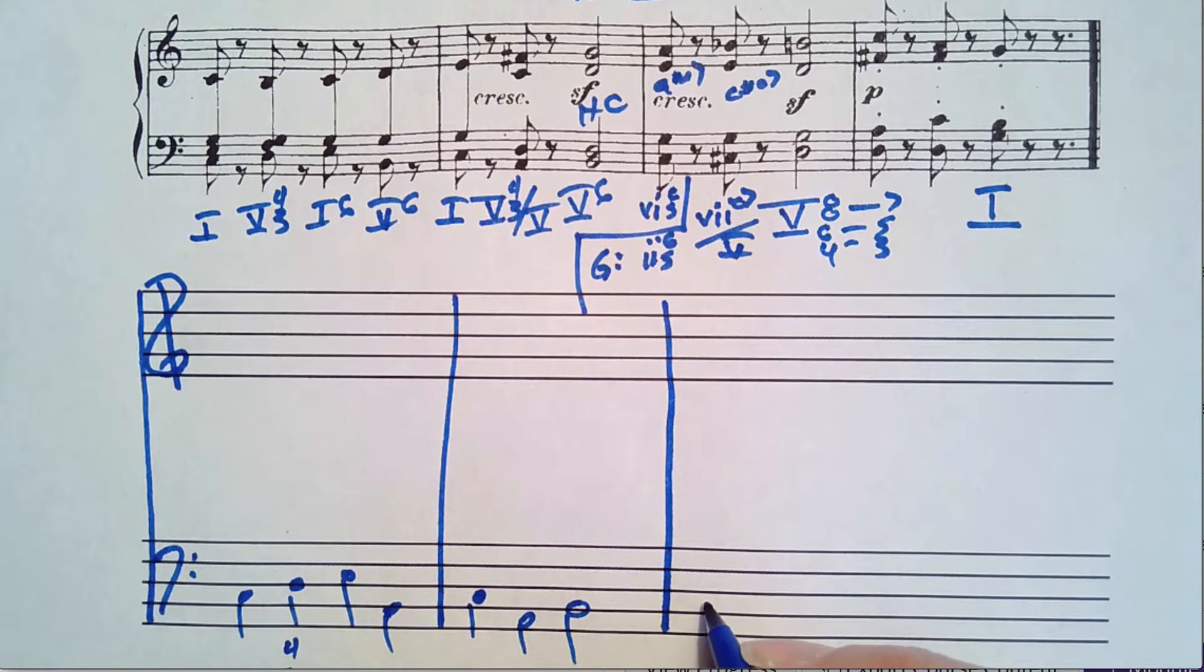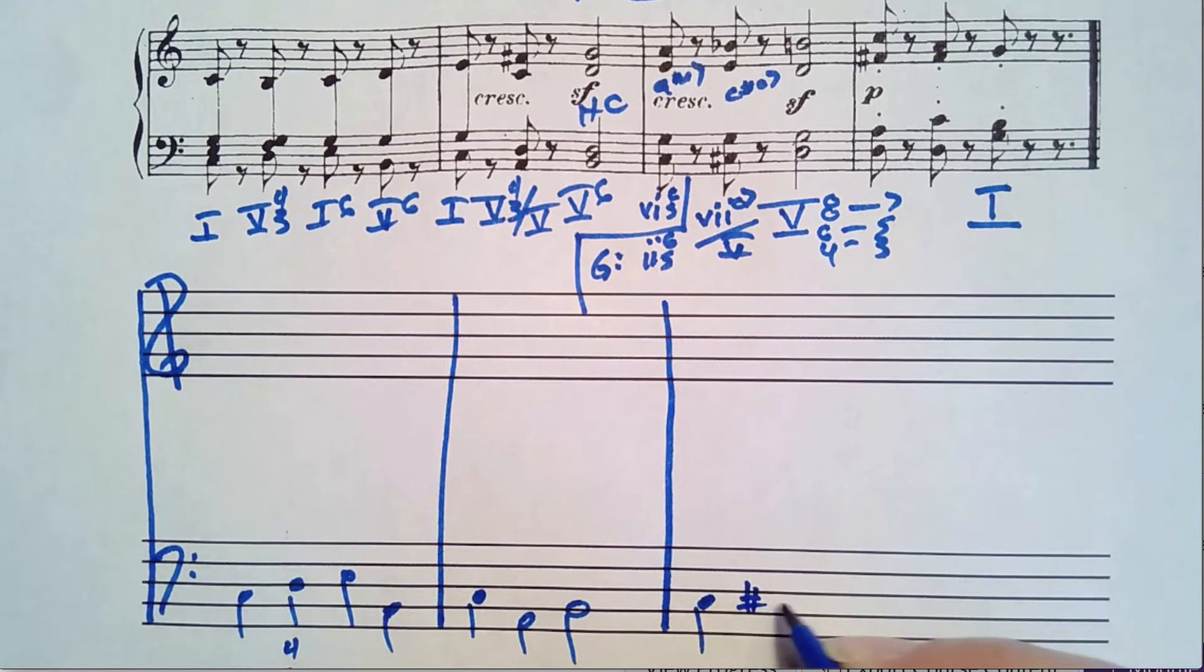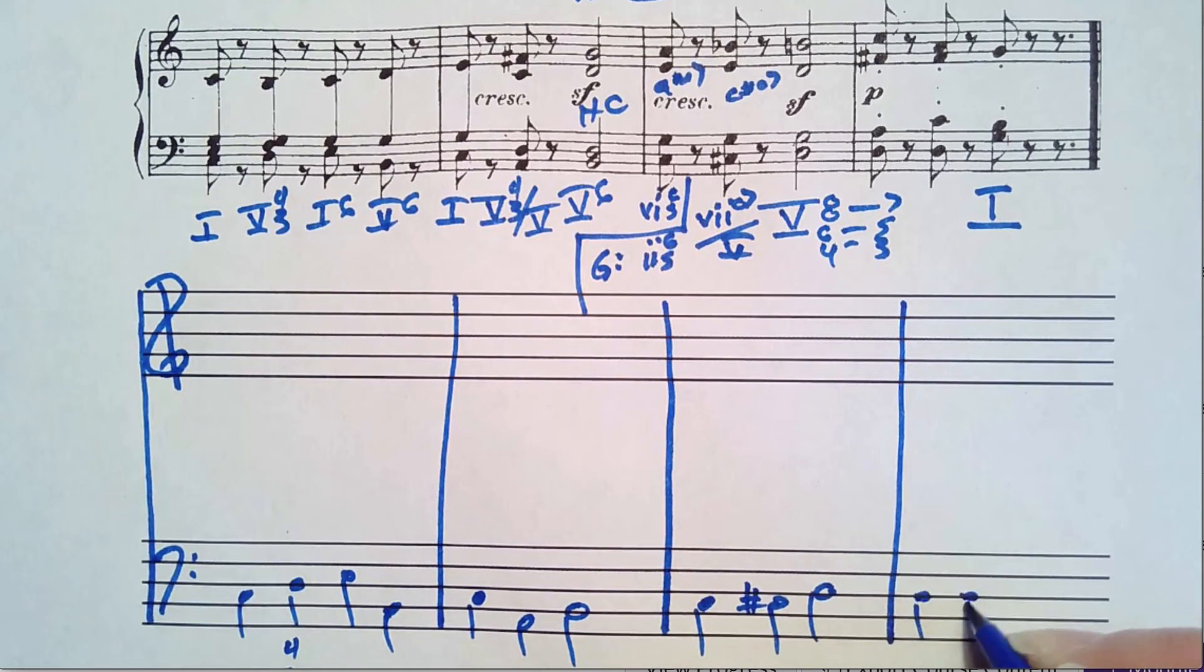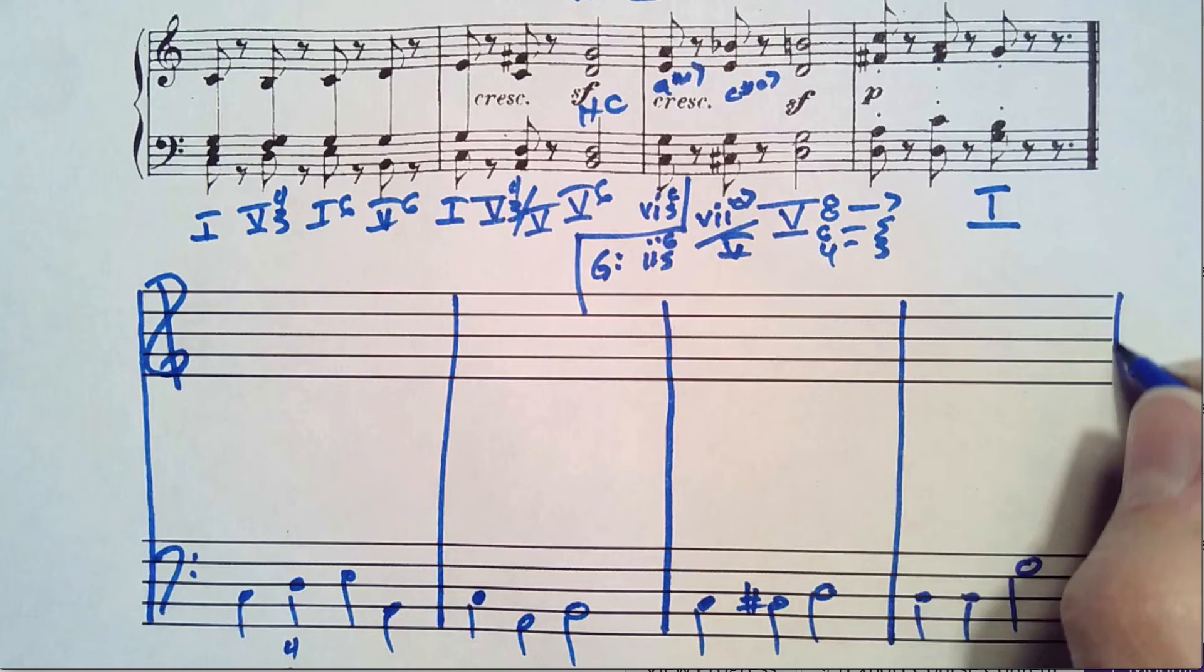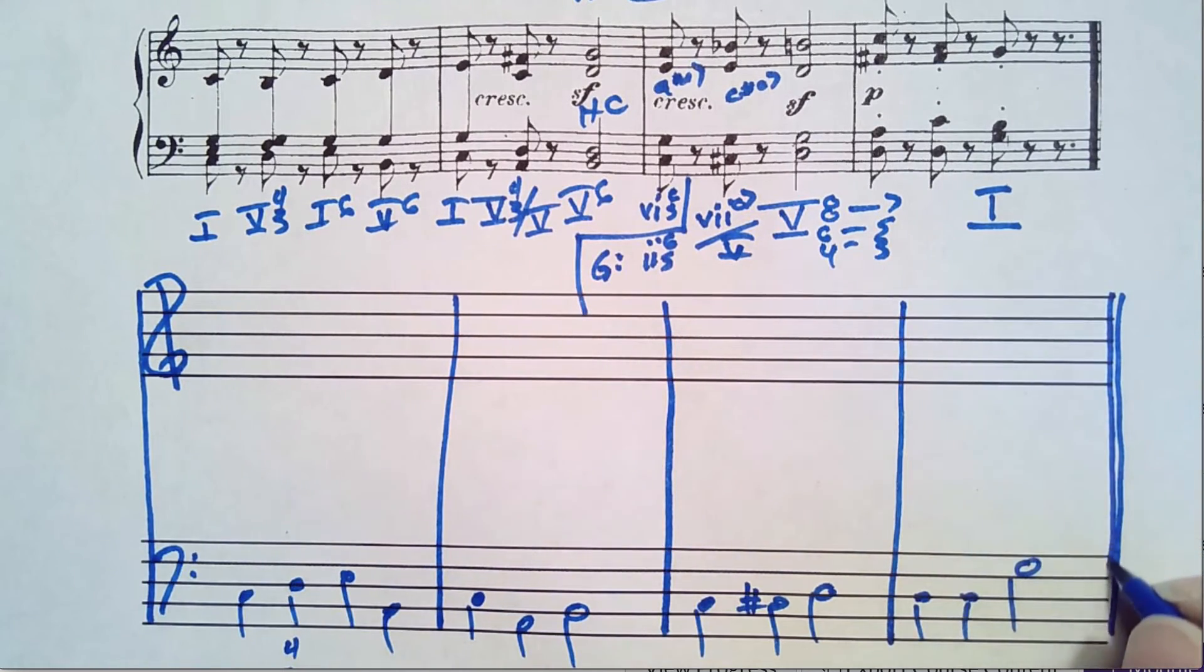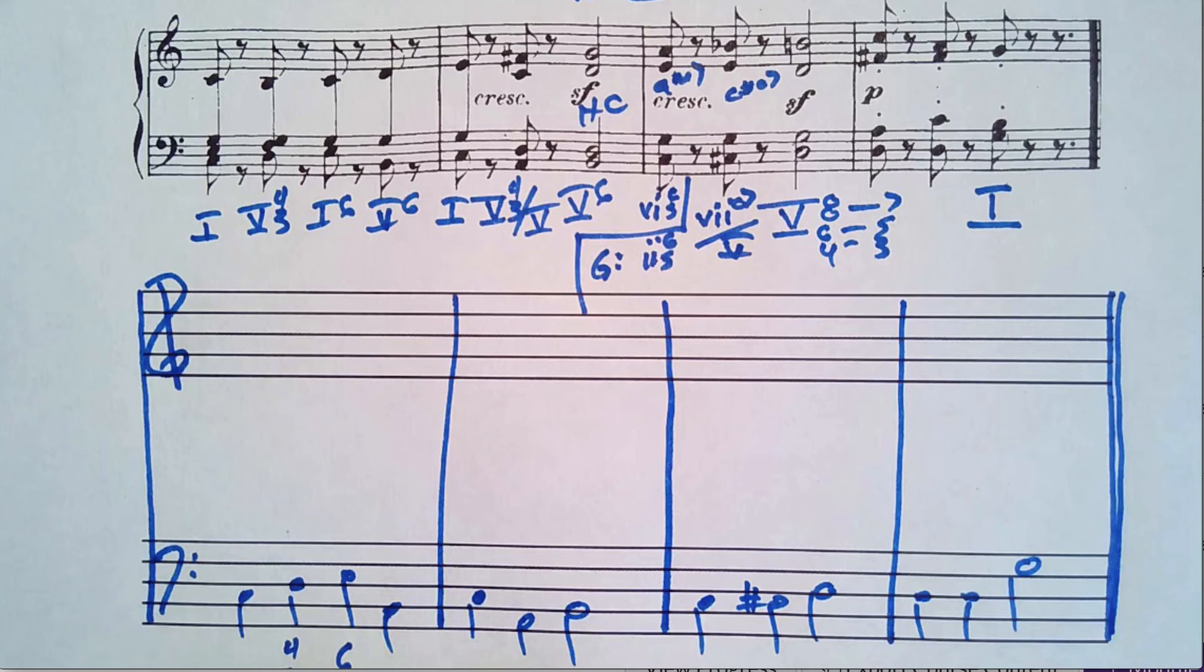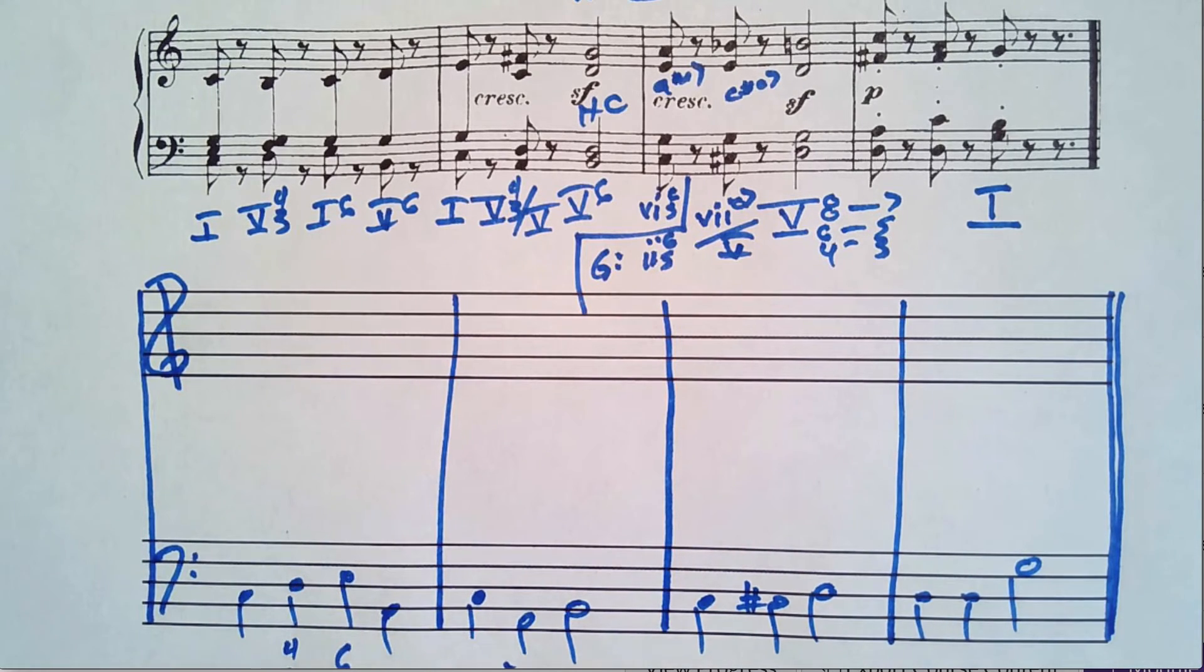So why don't you stop the video for a moment? Write out the baseline and add the figures. Okay. So now that we're back, I'm going to continue this. You can compare yours with mine. I've written everything as simple as possible. No rests. And here we've got root position, four, three, six, six. This is a root position chord. This is a four, three, and we're going to need to have the six, four, three, so that we can have the sharp six to tell us that there should be an F sharp in this chord.